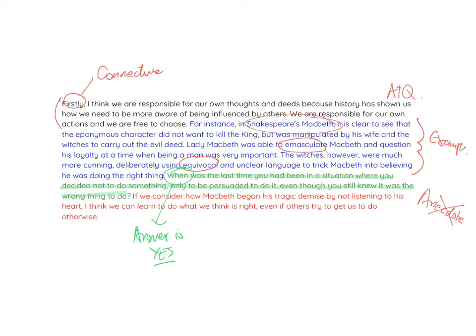And then finally I've got my solution at the end. It doesn't need to be specifically complicated - we don't need to try and save the world, we simply need to offer a solution. By breaking the paragraph down into those different sections - topic, example or statistics, develop your example, ask a rhetorical question, offer a solution - even without the anecdote here, it's still a really well-developed paragraph. It feels more convincing than just simply saying 'think about Macbeth, he was manipulated by Lady Macbeth, move on to the next paragraph.'